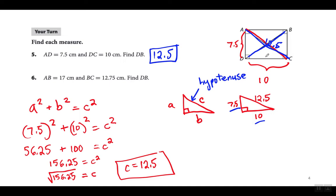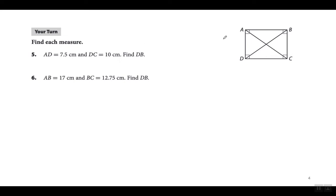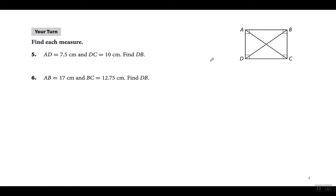Let's go to number 6, which is similar. AB is 17 and BC is 12.75, so we've got to find DB. I'm going to find AC and that will equal DB. Remember: the C side is always opposite the 90-degree angle — that's the hypotenuse. The other two sides are A and B. So A squared plus B squared equals C squared; 17² plus 12.75² equals C squared.